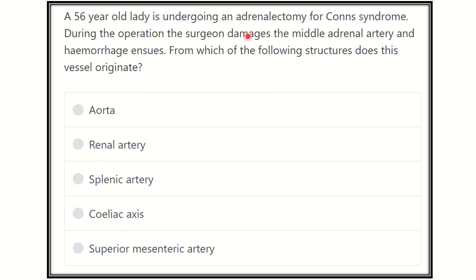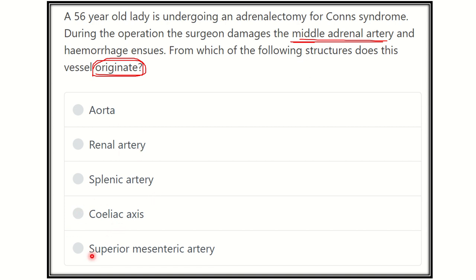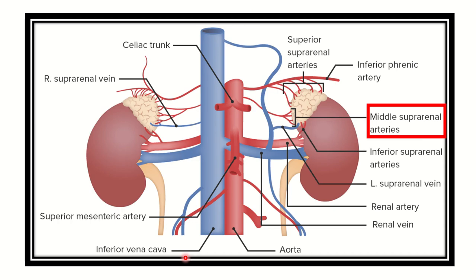During the operation, the surgeon damages the middle adrenal artery and hemorrhage ensues. From which of the following structures does the vessel originate? We have to find out the origin of the middle suprarenal artery. The options are: aorta, renal artery, splenic artery, celiac axis, and superior mesenteric artery.